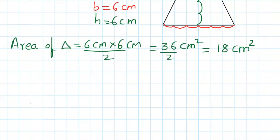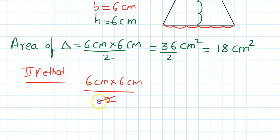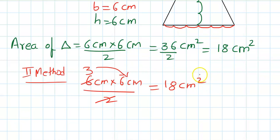Is there another way to do it? Yes. You can write 6 centimeter times 6 centimeter divided by 2 and then cancel: 2 times 3 is 6, and 3 times 6 is 18. So 18 centimeter square. This is another method to find the area of a triangle.